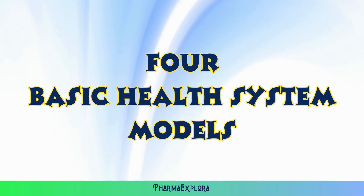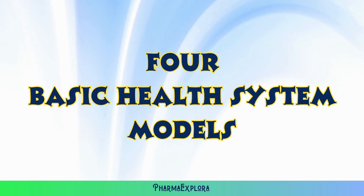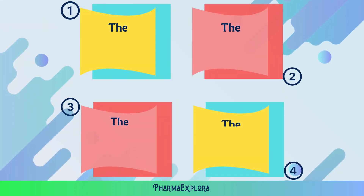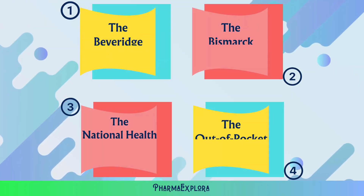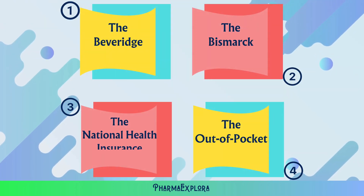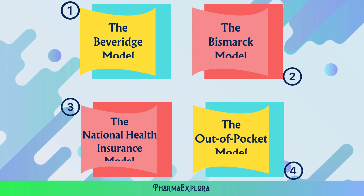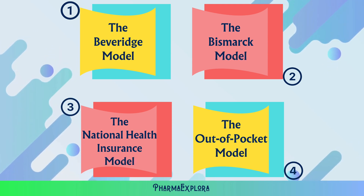Based on that, four basic health system models have been identified: the Beveridge model, the Bismarck model, the national health insurance model, and the out-of-pocket model. Now let's take a brief look at each health system model.